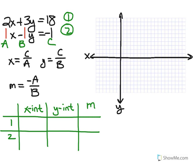For line 1, the x-intercept is given to be c over a, which is 18 over 2, which is 9. That means that (9,0) is a point on that line. For line 1, the y-intercept would be 18 over 3, which is 6. That means that (0,6) is a point on that line.